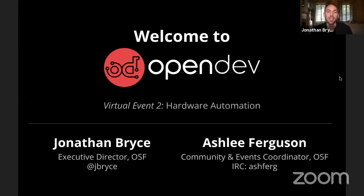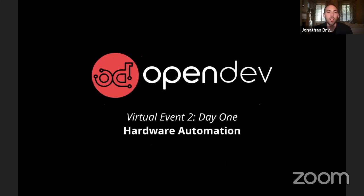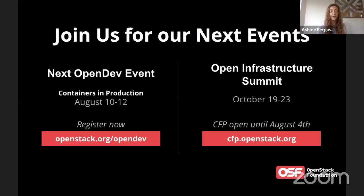So this is our second event in the OpenDev virtual event series. Ashley, why don't you talk a little bit about what this event is about and also what we have coming up the rest of the year? Yeah. So this event is going to be about hardware automation. This is our second OpenDev event. The last event was large scale usage of open infrastructure software. We also have a third OpenDev event coming up later in August, and that's going to be around containers in production.